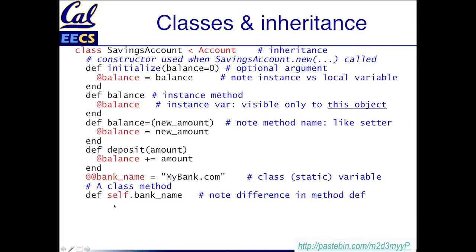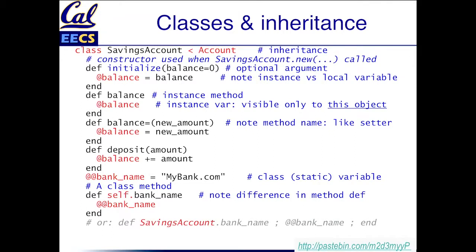Notice the difference in how we define it — we define self.bankName. The reason this works is that once we've started this class declaration, the value of self is the new class being created. So if we say def self.someMethodName, what we're really saying is we're defining this method on the class itself, as opposed to these other methods which are being defined on an instance of the class. We'll just return the bank name. Notice that we're not providing a setter for the bank name class variable, so you can't set it. An alternative to saying self.bankName is to use the name of the class itself — because inside a class definition the value of self is exactly the new class you're in the process of creating. And that's the end of our class definition.